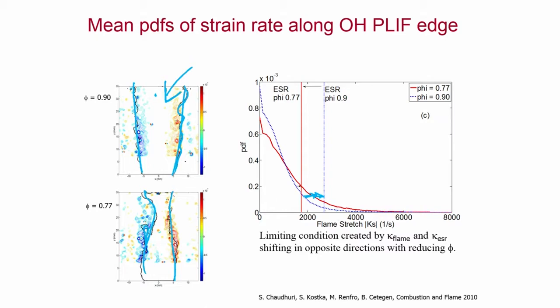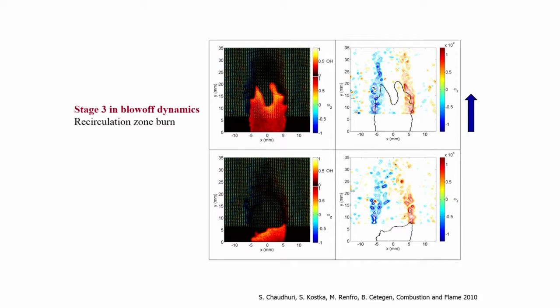At equivalence ratio 0.9, only a very small portion of the flame exceeded the extinction stretch rate, so there is very little extinction. But at 0.77, a much larger portion of the flame exceeds the extinction strain rate, causing the flame to extinguish along the shear layers. As a result, fresh mixture passes through the shear layers into the recirculation zone, reacts due to favorable time scales, and we see Stage 3 in blow-off dynamics — recirculation zone burn — clearly evidenced by superequilibrium OH inside the recirculation zone.